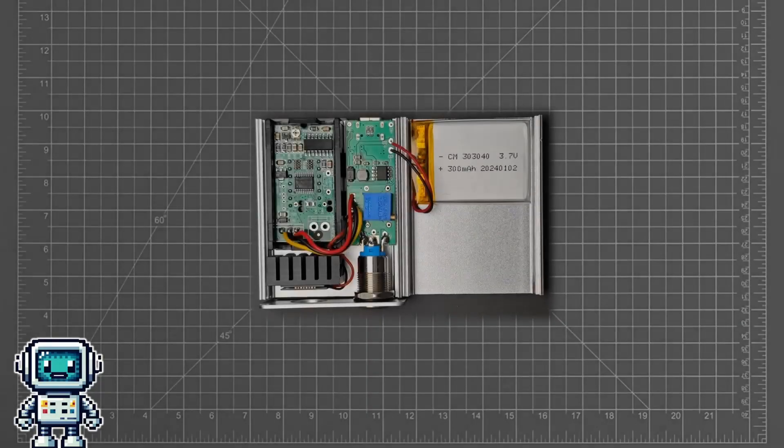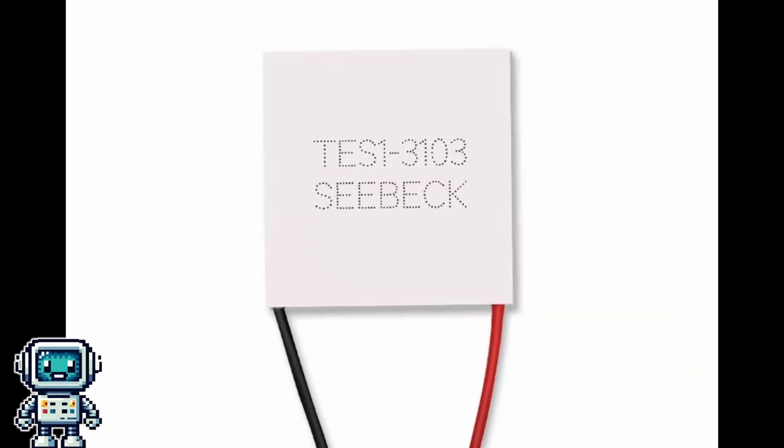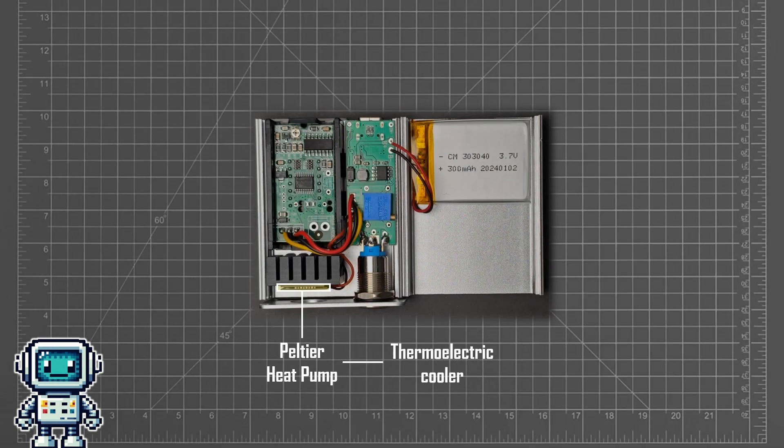You see, there are basically only three components that are responsible for the laser power measurement process. This is a Peltier heat pump, also known as a thermoelectric cooler. This is the power sensor, and we will talk about how this works later on. There is a heat sink attached to the rear side of the Peltier device. This is needed to maintain the inboard side of the heat pump at a constant temperature.